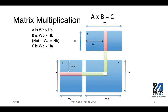Matrix multiplication is a very commonly used example to teach parallel programming. Let's look at this simple two-matrix multiply that produces the result, the product, into C. We have matrix A and B, and the product of these two matrices will be in C. The dimensions of matrix A are WA by HA, and the dimensions for matrix B are WB by HB. In order for this matrix multiplication to be valid, we have the requirement that WA equals HB. As a result, the dimensions for matrix C are going to be WB by HA.